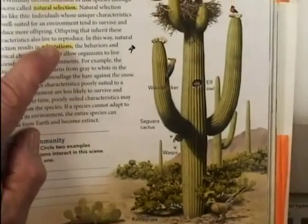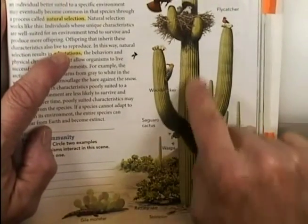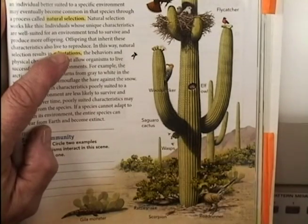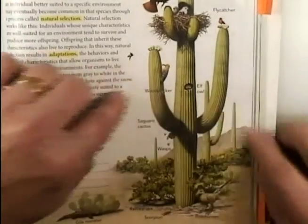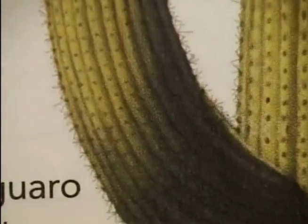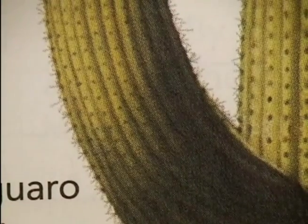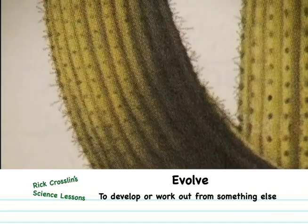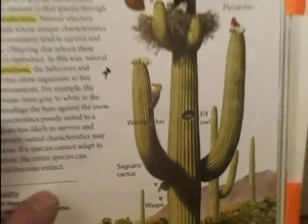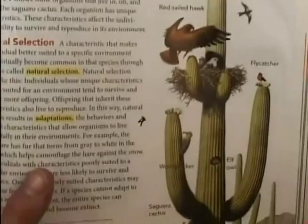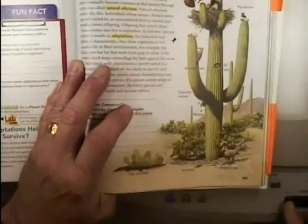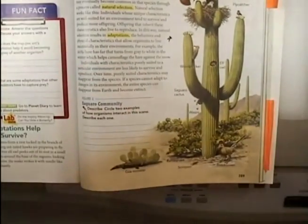Even the cactus in the desert has adaptations. This large saguaro cactus is almost like an accordion. Since it doesn't rain much, when it does rain, all of these pleats will swell up to soak up the water. Also, the leaves have evolved into needles so they don't dry out. So the desert, like any environment, has plants and animals that have special adaptations allowing them to be successful in their environment.